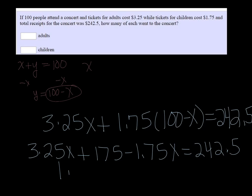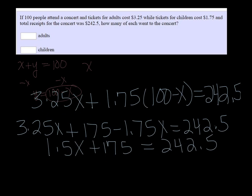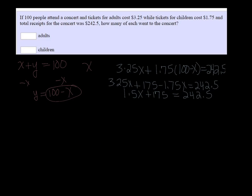And if I subtract that 175 on both sides, I get 67.50. So I have 1.5X is equal to 67.50, and then finally if I divide both sides by 1.5, I get that X is 45.